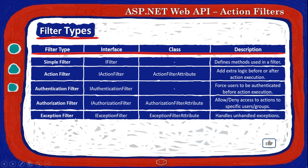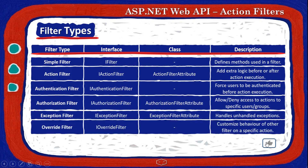The next one, exception filter, has an interface of iExceptionFilter and a class of ExceptionFilter attribute. The main goal of this filter is to handle unhandled exceptions. If we have an action method and inside of that action method we don't handle a specific exception, this filter is for that goal. Finally, we have the override filter with just an interface of iOverrideFilter, and it is used to customize behavior of other filters on a specific action.